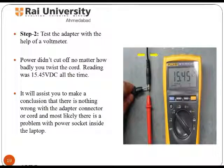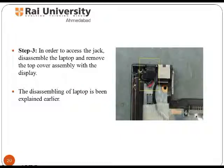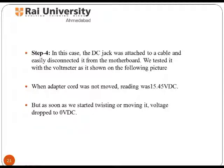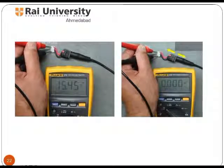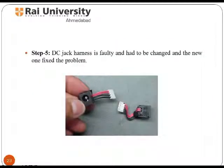Test the adapter with the help of a multimeter. If there is nothing wrong with the adapter connector, then there might be a problem with the power socket inside the laptop. Remove the top cover assembly with the display to access the jack. The DC jack was attached to a cable and can be disconnected from the motherboard for testing. Using the multimeter, voltage should read 15.45 VDC if the adapter cord is not moved, but as soon as it is twisted or moved, voltage drops to 0 VDC. If that is the case, the DC jack harness is faulty and must be replaced with a new one. If the battery stops charging because of moving the adapter plug, test the AC adapter first; if it passes the test, replace the jack.